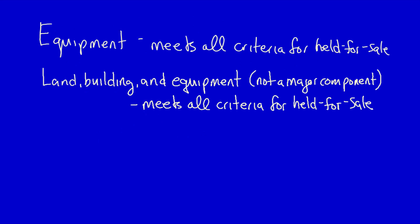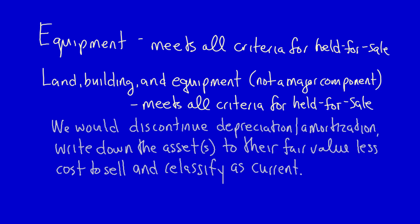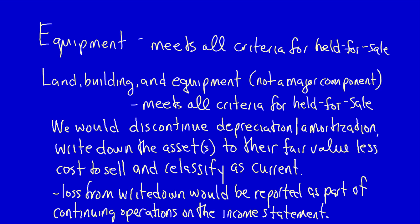Let's clarify this with a few examples. If you have equipment that meets all the criteria for a held-for-sale asset, or you have land, building, and equipment — not a major component — that meets all the criteria for a held-for-sale asset, in both cases the asset or asset group would be classified as held for sale. Amortization would be discontinued, the assets would be remeasured at fair value less cost to sell, and reclassified as a current asset. Any loss from the write-down would be recorded in continuing operations on the income statement.